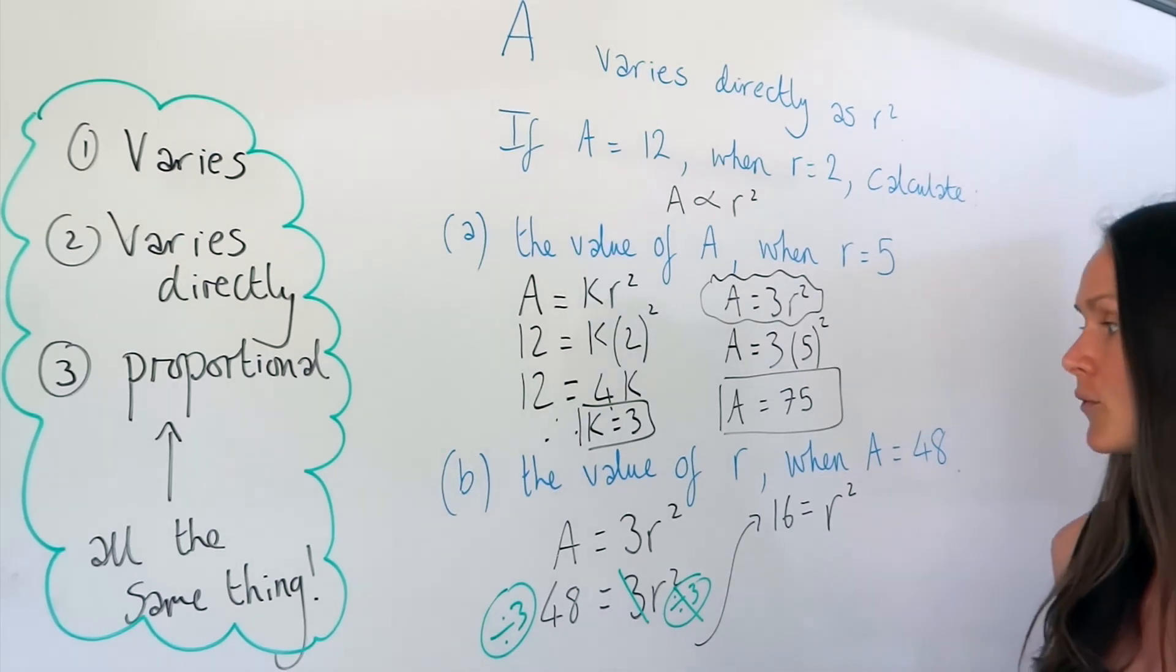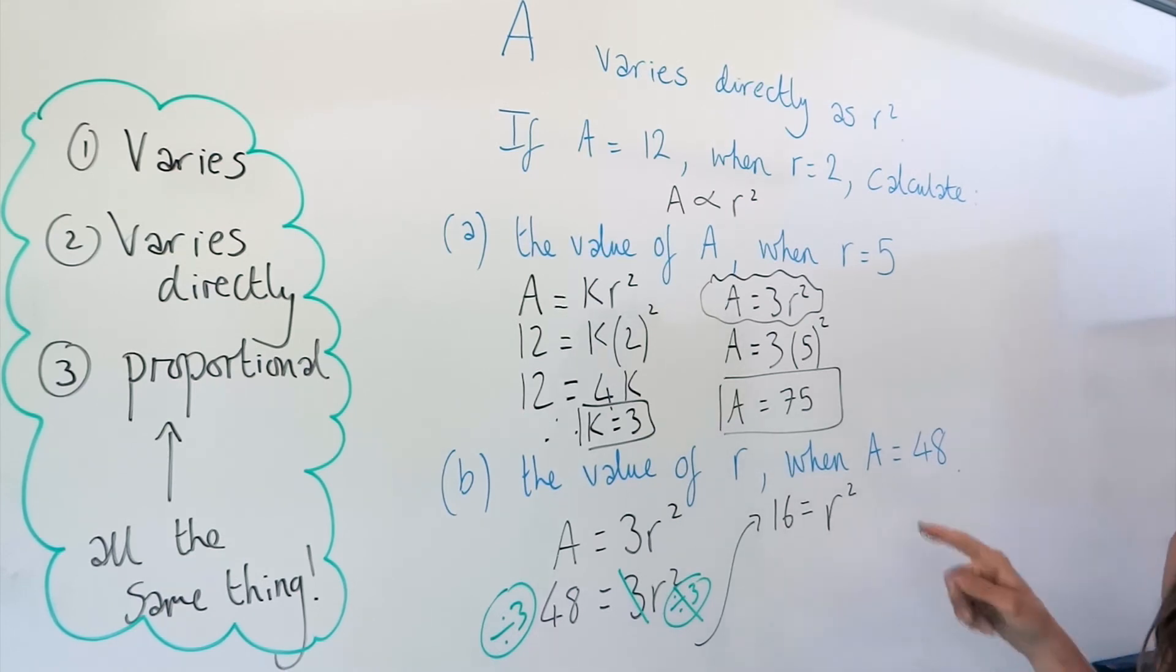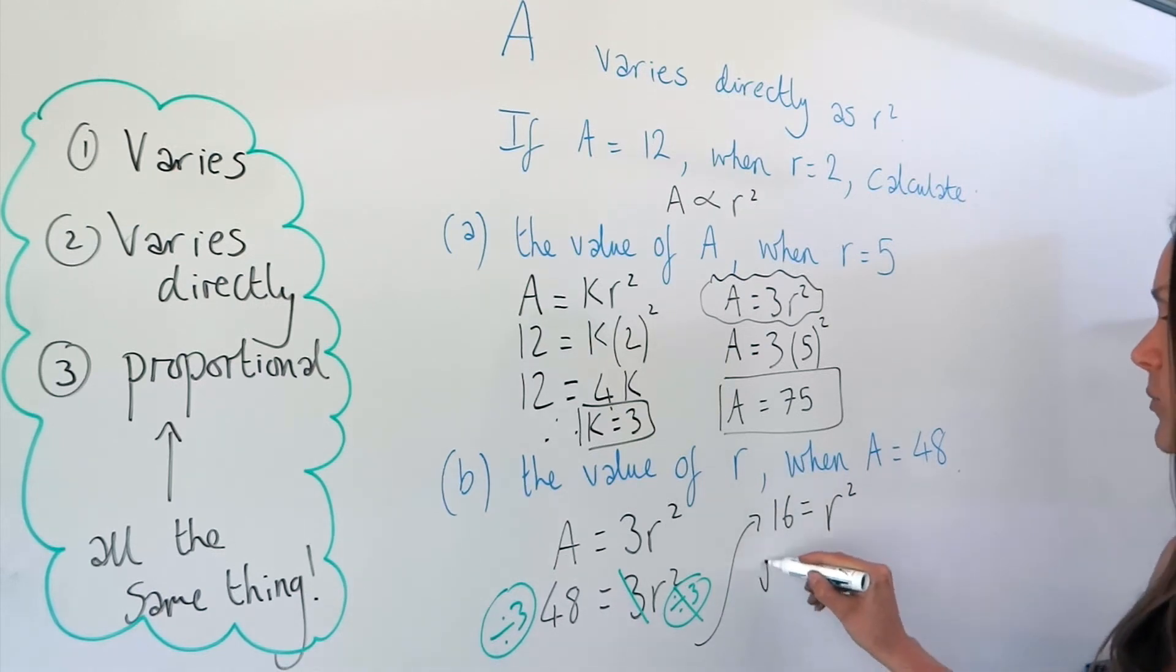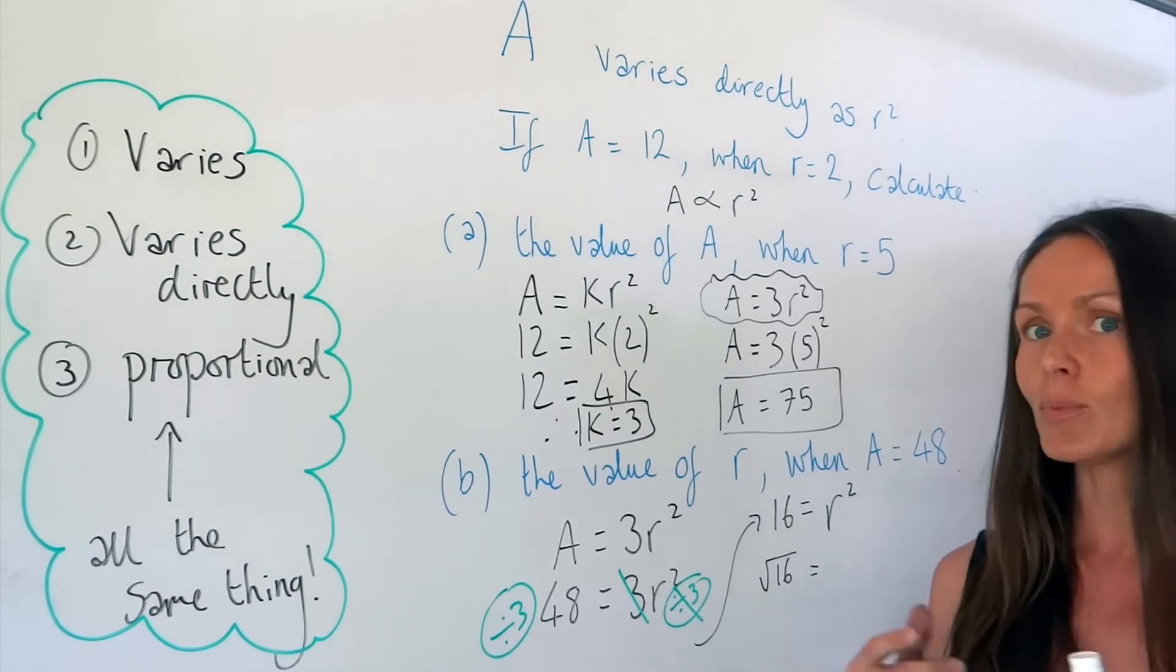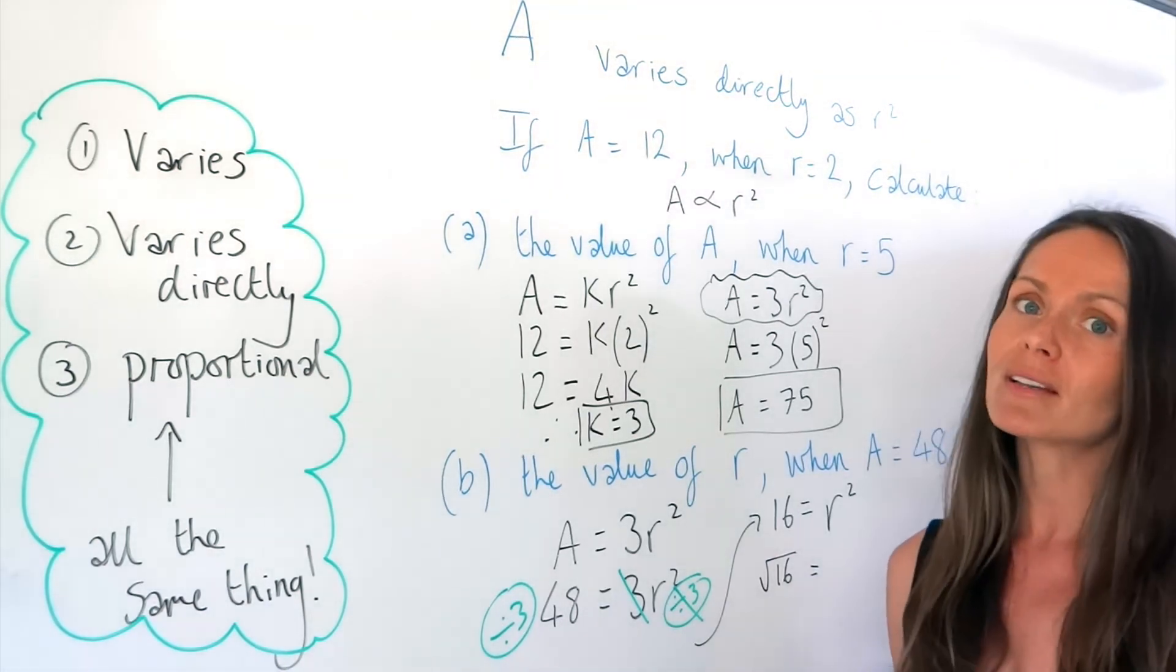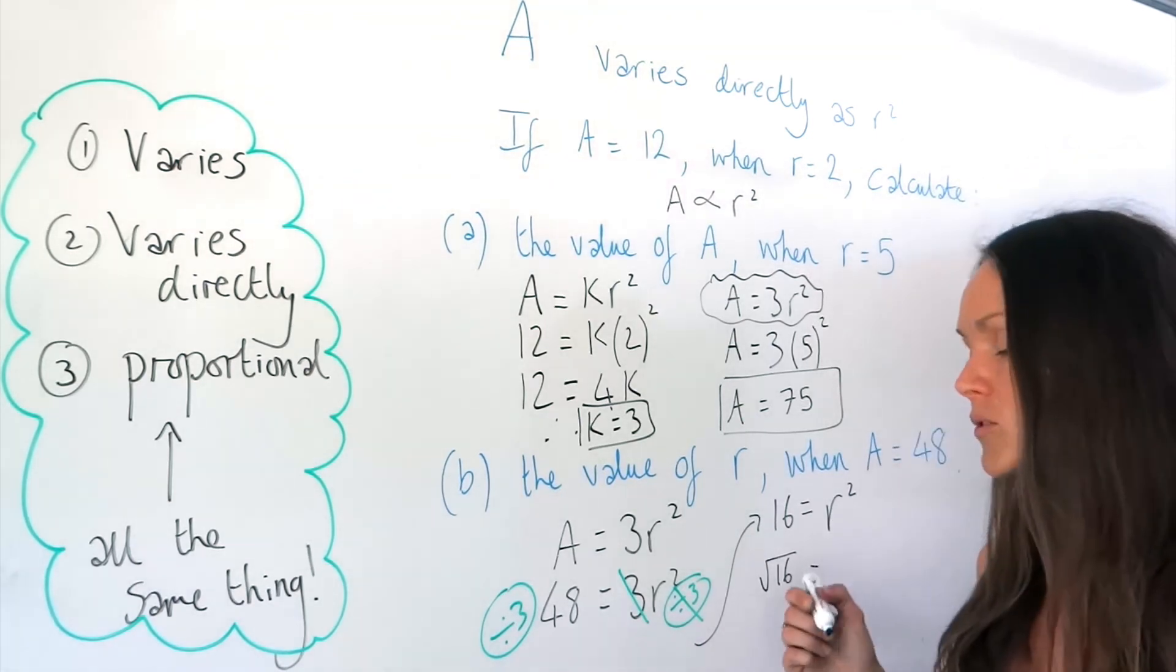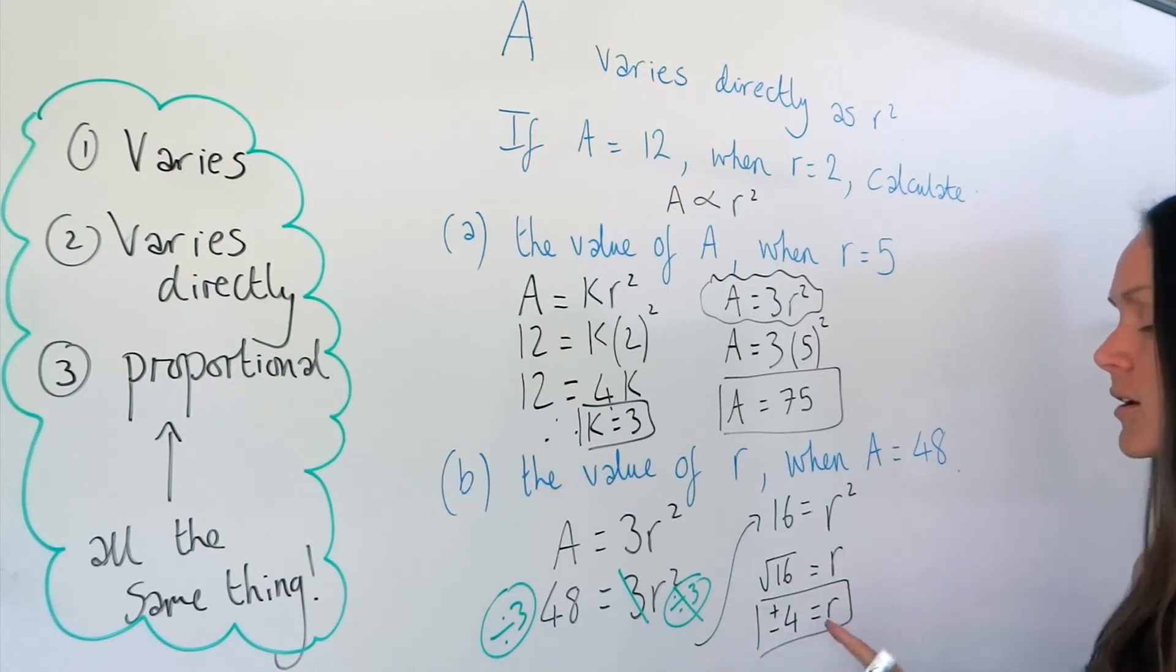So we haven't finished, because we need to find the value of r, and it currently says r squared. So to get rid of the squared symbol, we need to do the opposite, and we need to square root. So I'm going to square root everything in this equation. So when I square root 16, we have to be careful, because there are two answers. When I square root 16, yes, we get 4, because 4 squared is 16, 4 times 4 is 16. But we also get a negative value, because negative 4 squared is also 16, because negative 4 times negative 4 also gives me positive 16.